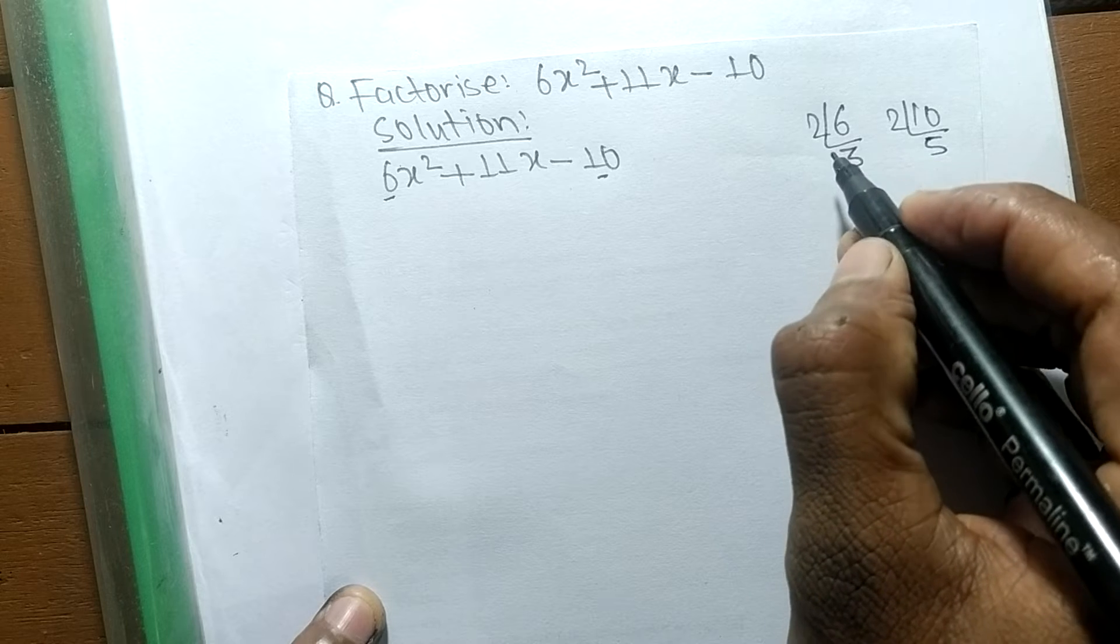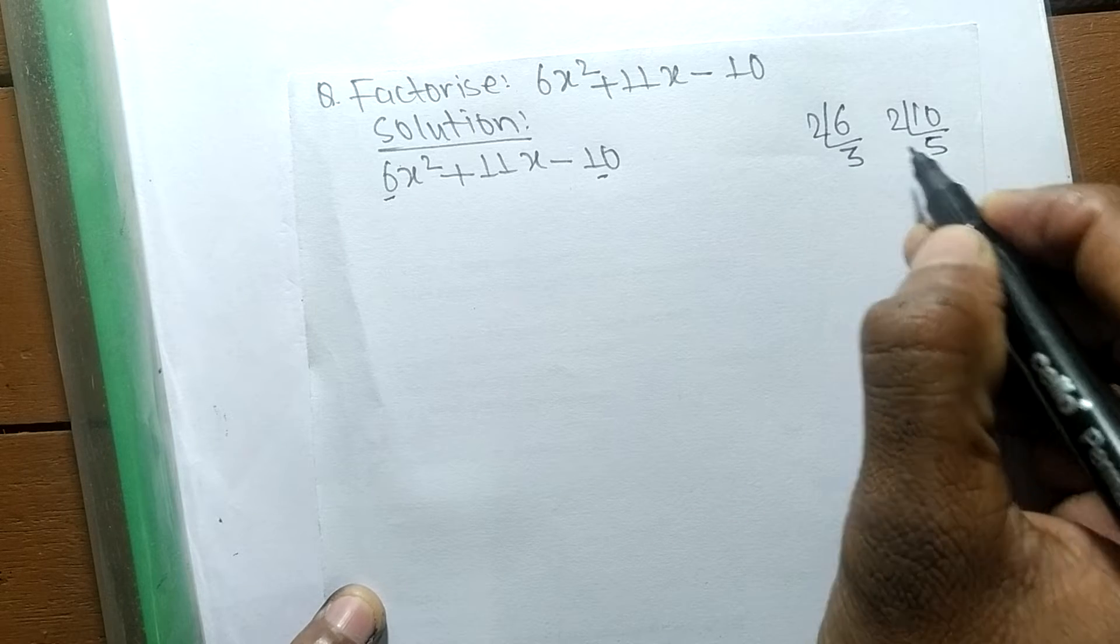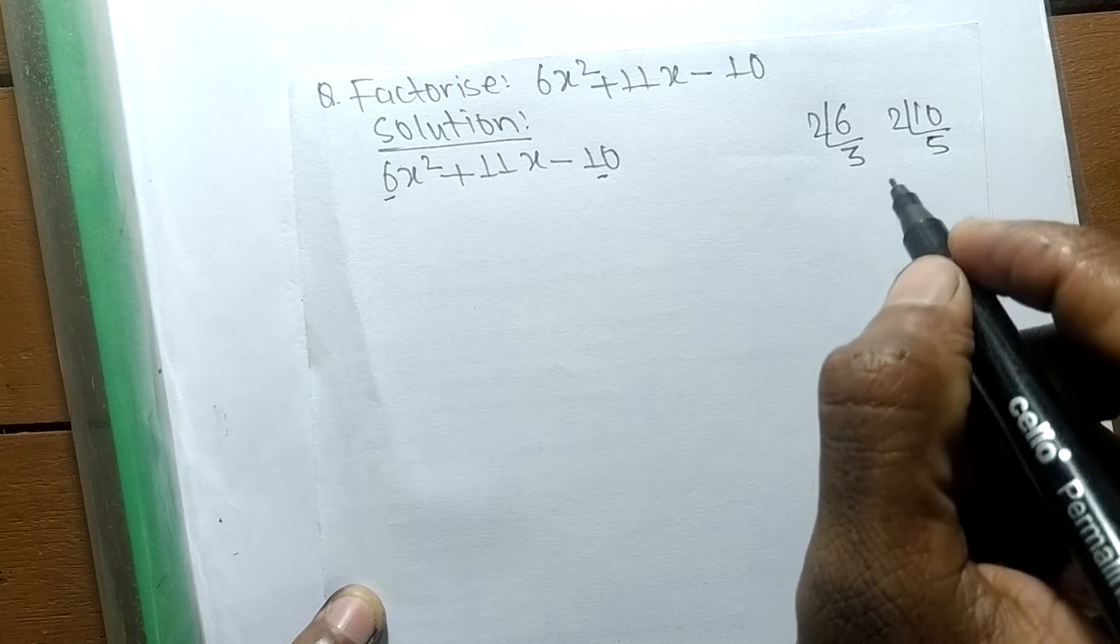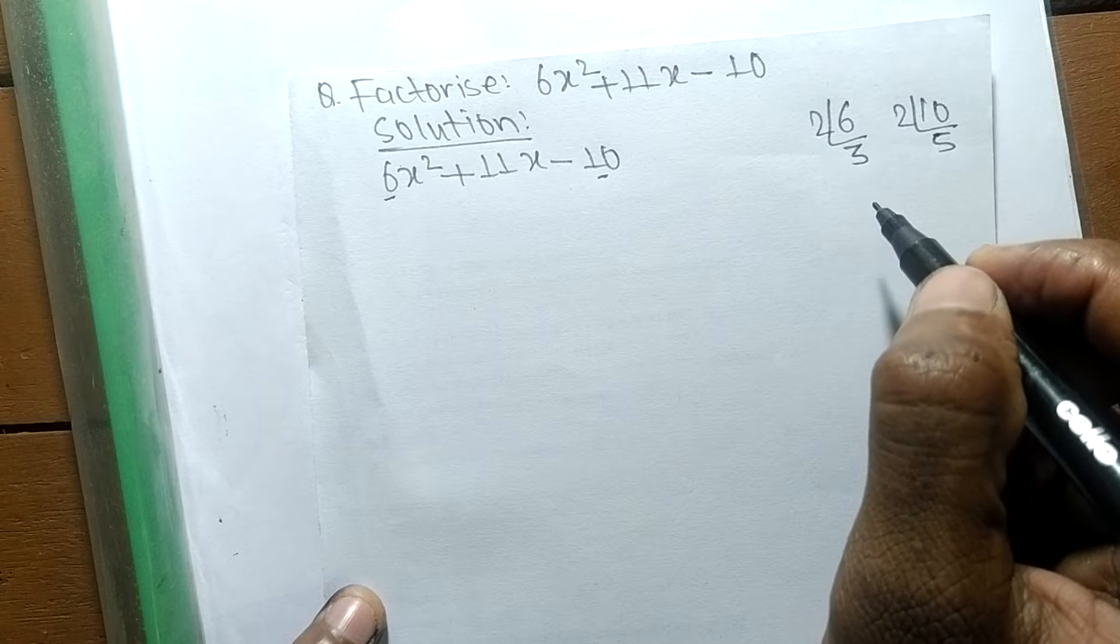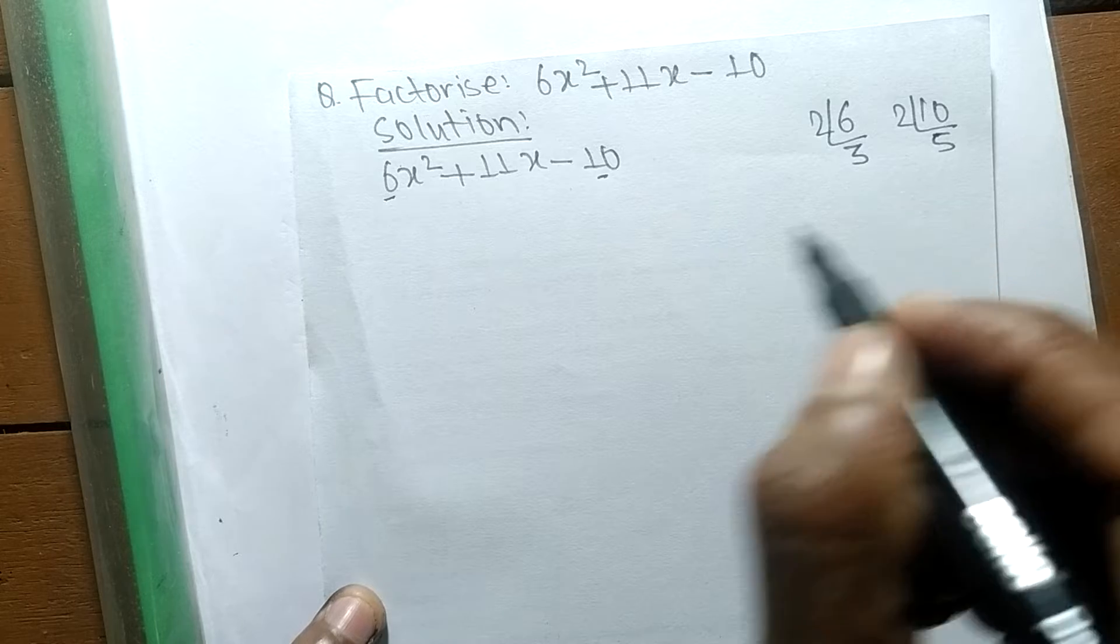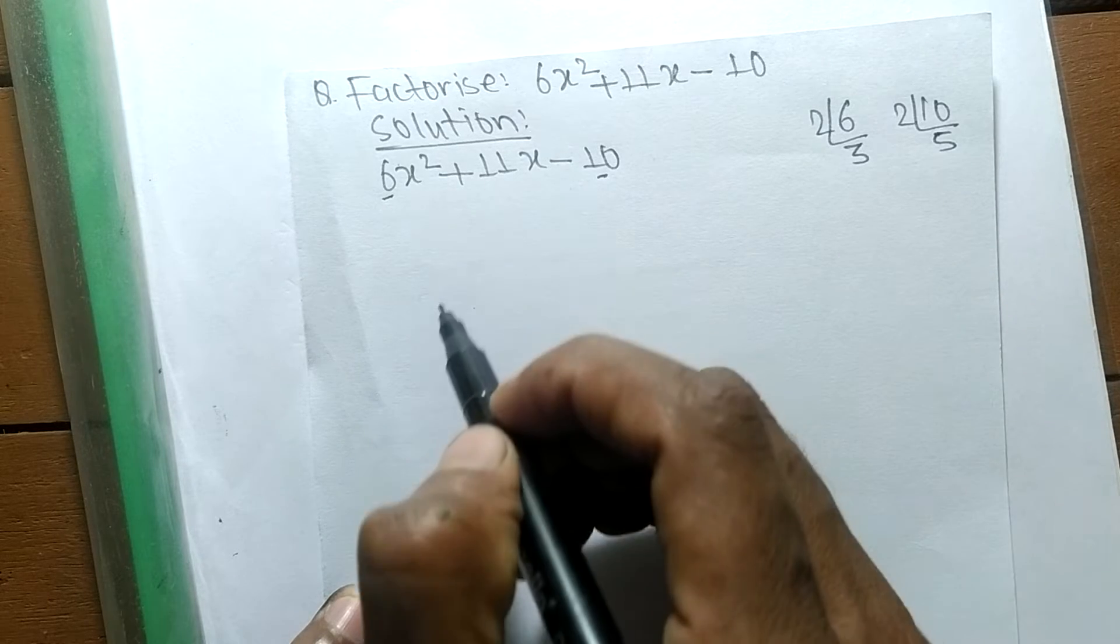So now we have got the numbers 2, 3, 2, and 5. By multiplying within these prime numbers, we have to find such a number that by adding we get plus 11.